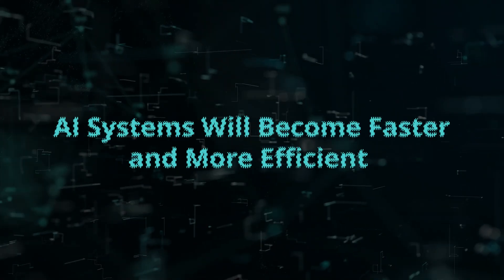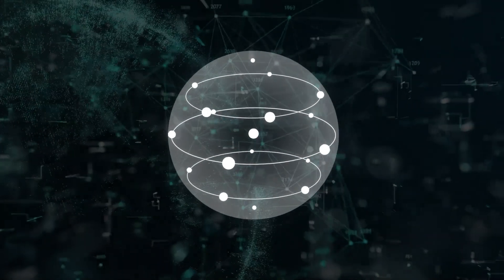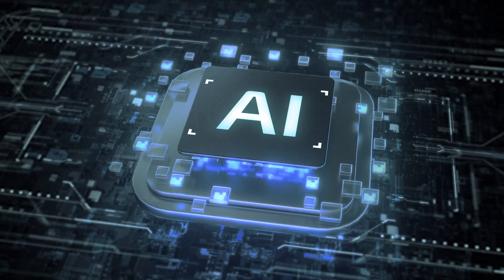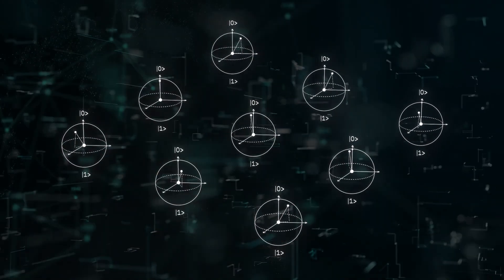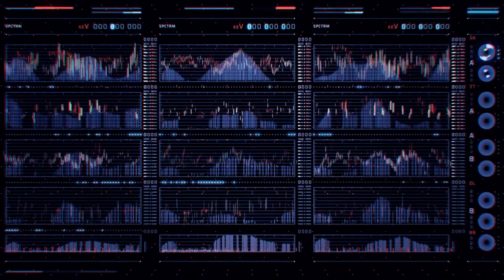Number 1: AI Systems Will Become Faster and More Efficient. Quantum computing is like a superhero for artificial intelligence. It uses tiny particles called quantum bits, or qubits, that can do many calculations at the same time.